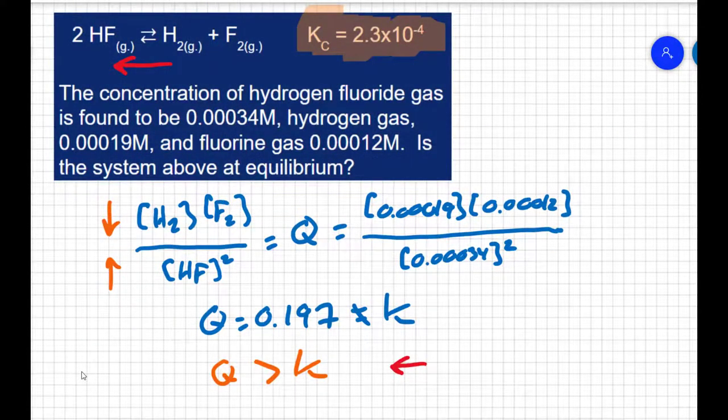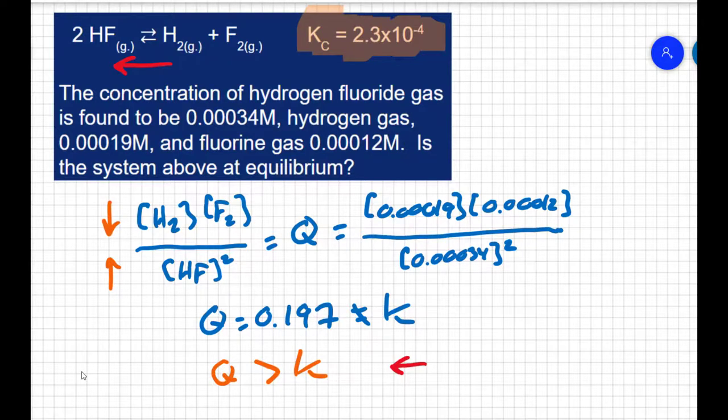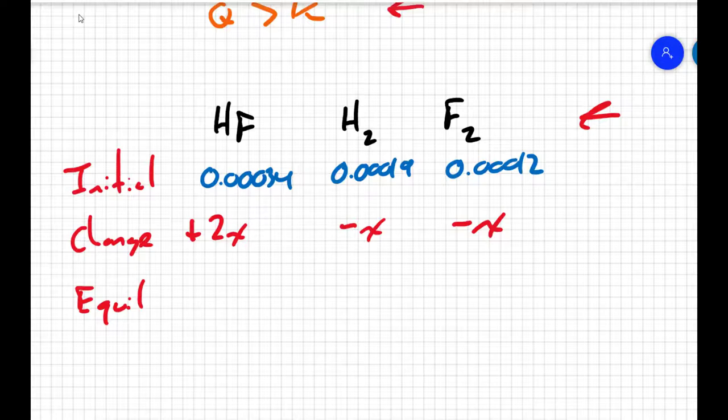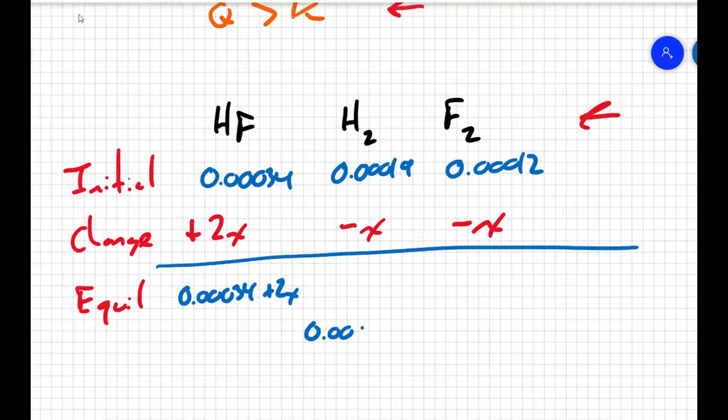The hydrogen fluoride reacts at a two to one ratio with the hydrogen and the fluorine. So if the hydrogen and fluorine are decreasing, the hydrogen fluoride must increase. But it's going to increase at a rate of 2X because of the two to one to one ratios in the balanced equation. This means at equilibrium, my HF will equal 0.00034 plus 2X. The hydrogen will be 0.00019 minus X, and the fluorine will be 0.00012 minus X.